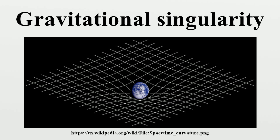Some theories, such as the theory of loop quantum gravity, suggest that singularities may not exist. The idea is that due to quantum gravity effects, there is a minimum distance beyond which the force of gravity no longer continues to increase as the distance between the masses becomes shorter. The Einstein-Cartan-Sciama-Kibble theory of gravity naturally averts the gravitational singularity at the Big Bang.